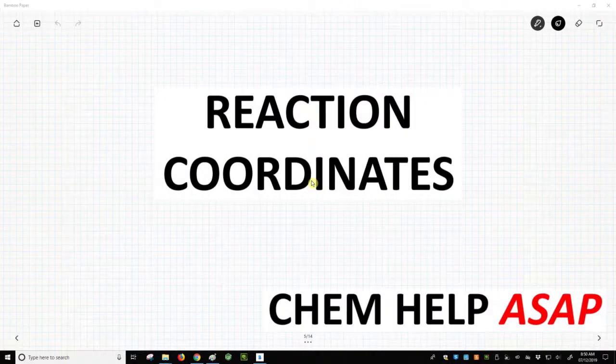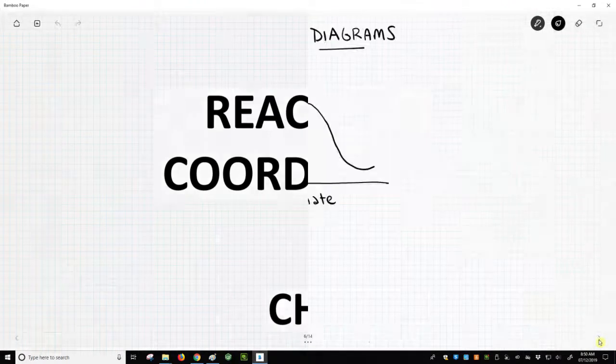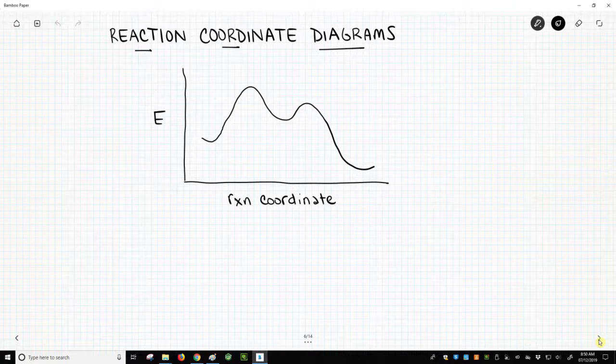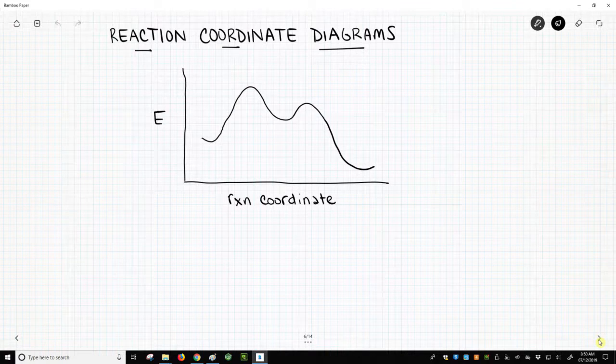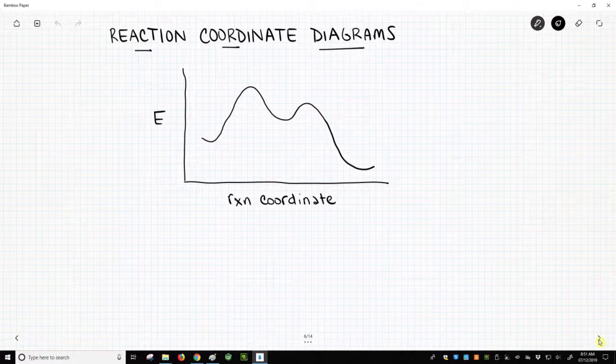Hello from Chem Help ASAP. We are going to discuss reaction coordinates or reaction coordinate diagrams. On the screen we have written, this is a fairly typical reaction coordinate diagram. They don't always look exactly like this, but a lot of them will look exactly like this.